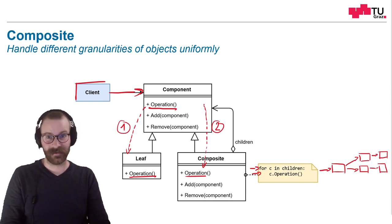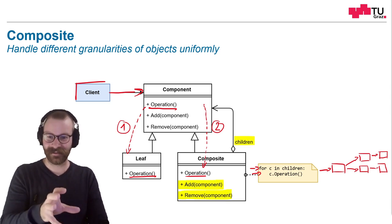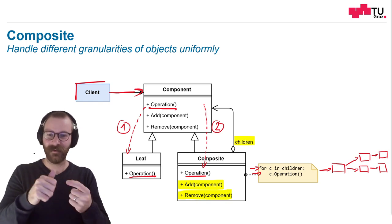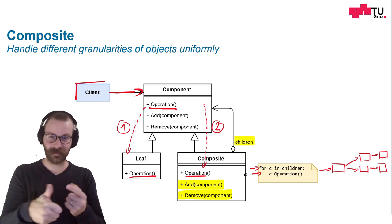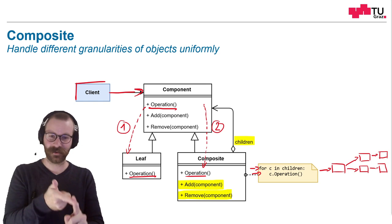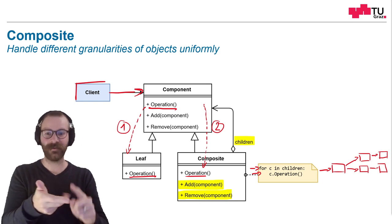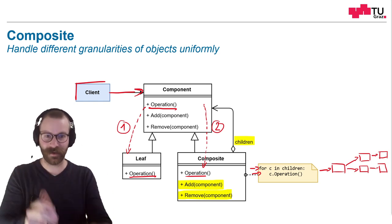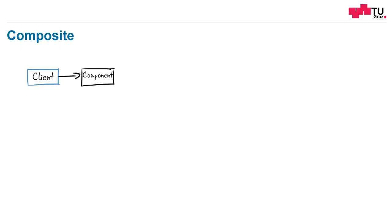In order to have children, we have to add two methods. First, we want to have a list of all children. And we should give the possibility to add or remove further components. What can we do with this structure? First of all, we as a client can just call the method from another component. If this component is a leaf, we are done. In this way, single objects are considered.